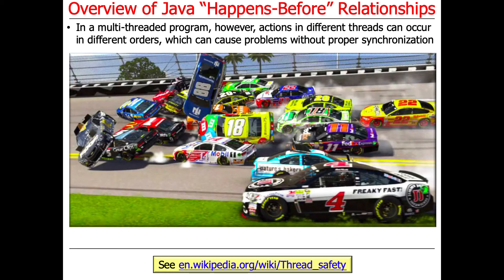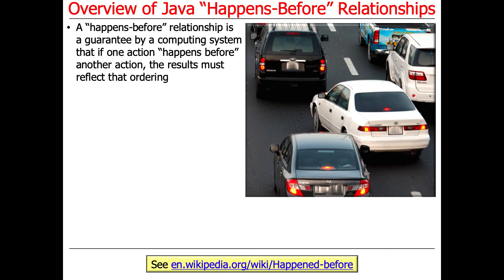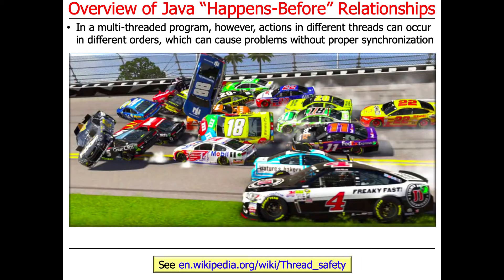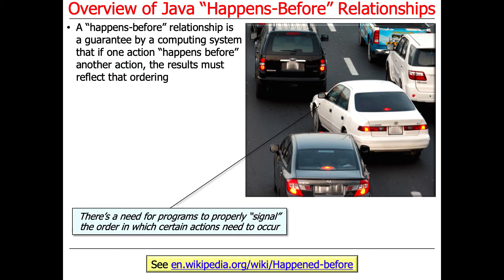This is what happens in a multi-threaded program if you have actions in different threads that are all occurring at the same time without proper synchronization. You can have a big pileup. Everything smashes into each other, and it's a big mess. What happens-before relationship does is it will guarantee that if some action happens before some other action, that the results that you see as a programmer must, in fact, reflect that ordering. It's politely letting you switch lanes and move things around as opposed to having a massive pileup. What you want to have happen is a way to signal the right ordering, so you can have things occur in the right order in a more disciplined and polite way.